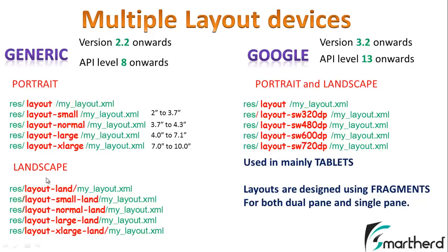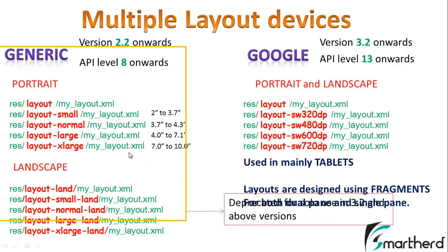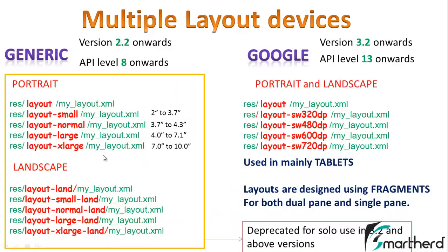At that point, we won't need all 10 folders — only 5 folders will do the job. If you are using these 5 folders, then layout-normal, layout-large, and similar folders are actually deprecated for solo use in version 3.2, Honeycomb, and above. As a beginner, we will design our layouts in these 10 folders for now, and later during fragment tutorials I'll show you how a single layout can act for both portrait and landscape mode.